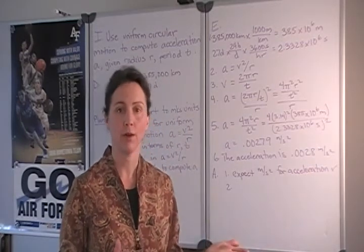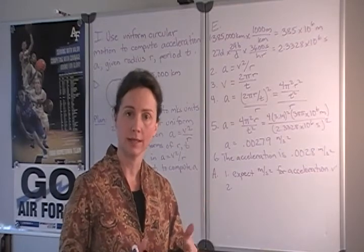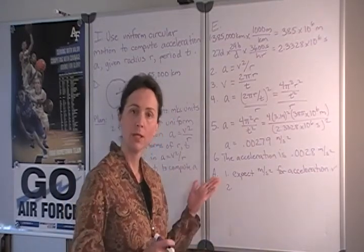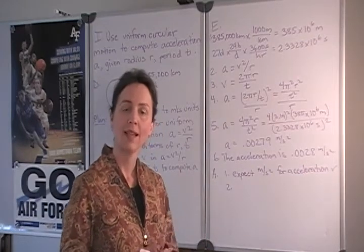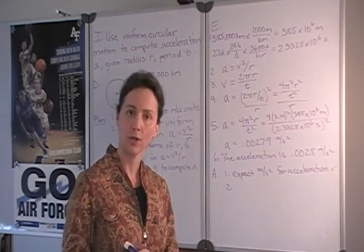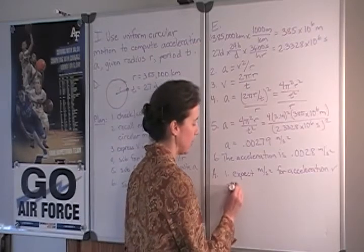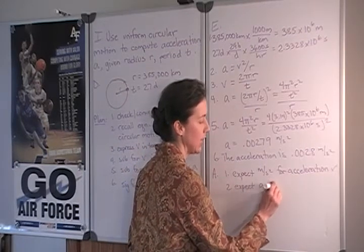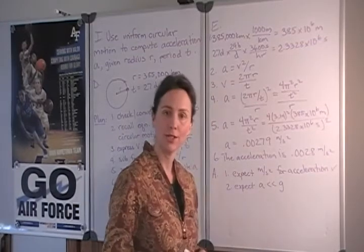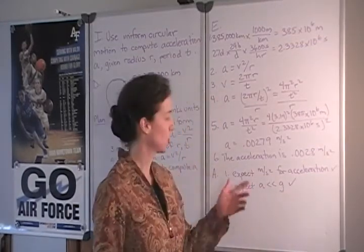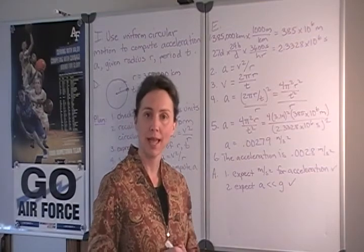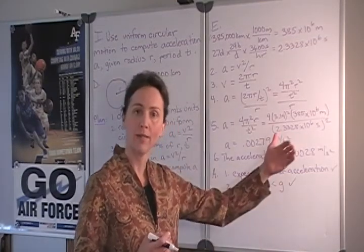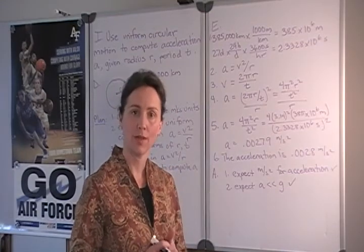So we would expect the acceleration being experienced by the Moon to be much less than the acceleration on our surface. So we can write that briefly as we expect a to be much less than the acceleration due to gravity 9.8 meters per second squared and indeed it is much less because that acceleration falls off as the square of distance from the center of the Earth.